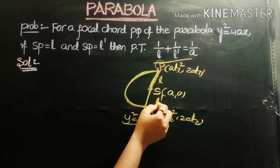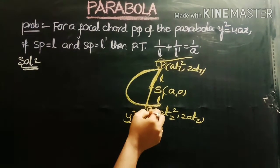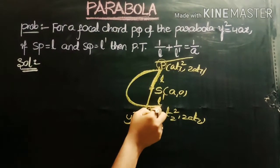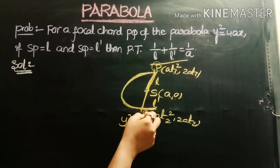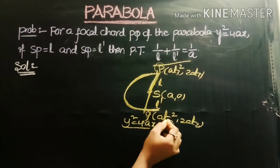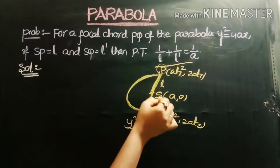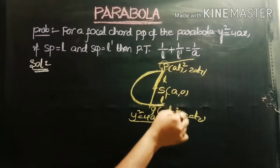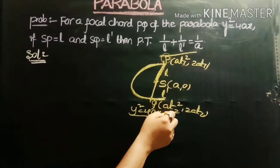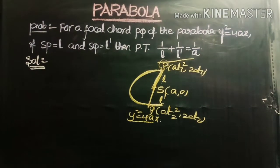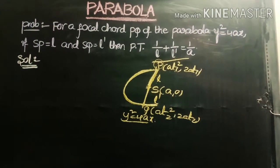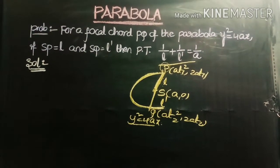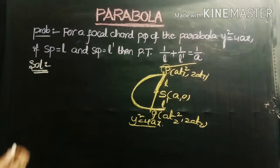Similarly, L' = SQ is the focal distance of Q. Using the formula x + a, with x-coordinate of Q being aT2², we get L' = aT2² + a = a(T2² + 1). Now we substitute these two distance values into the left-hand side 1/L + 1/L'. After simplification, we will get the answer 1/a.